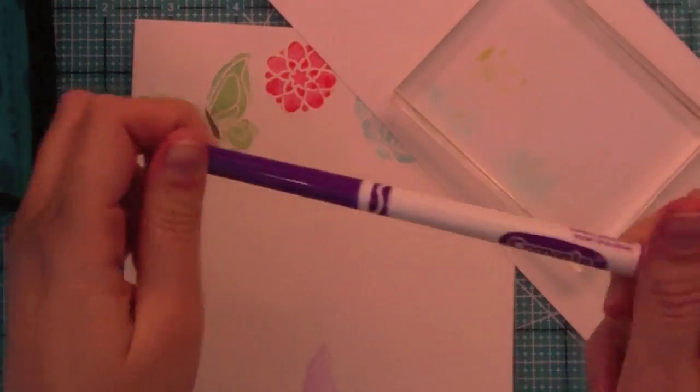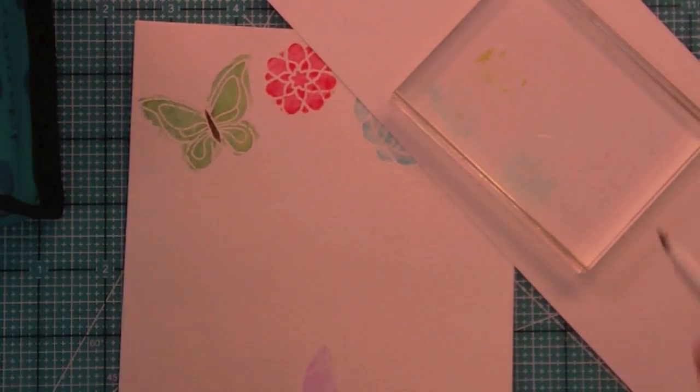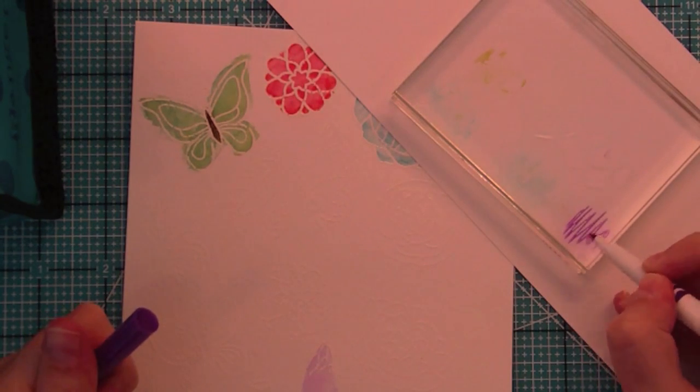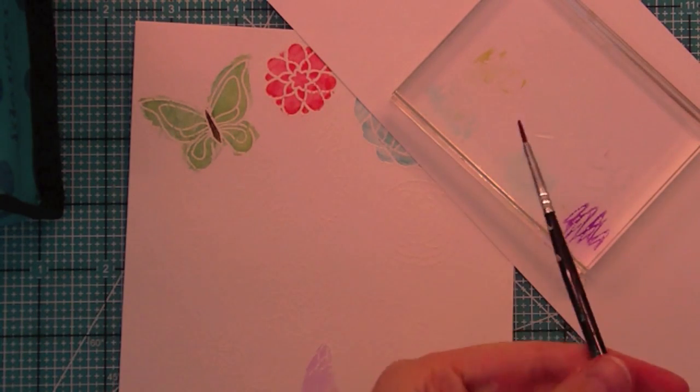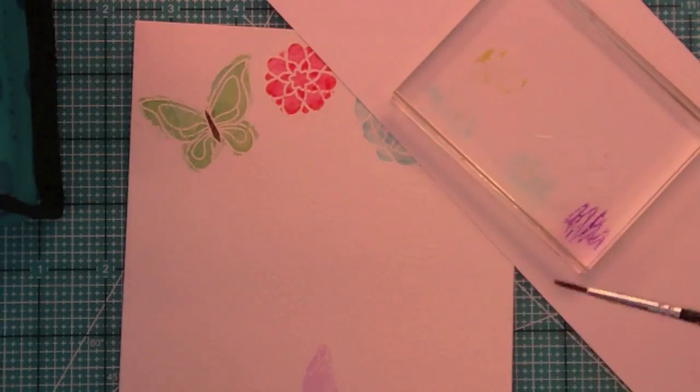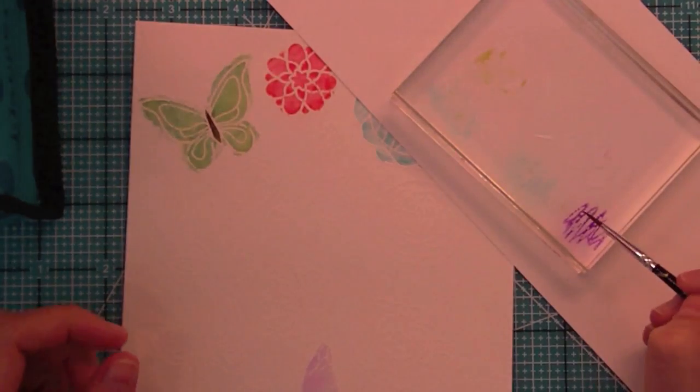Right now we're going to try the Crayola technique here and I'm going to scribble it right on the block just like we did the other markers and pick it up with the paintbrush. Now you can also do direct to paper with the Crayola markers too. It looks really cool.